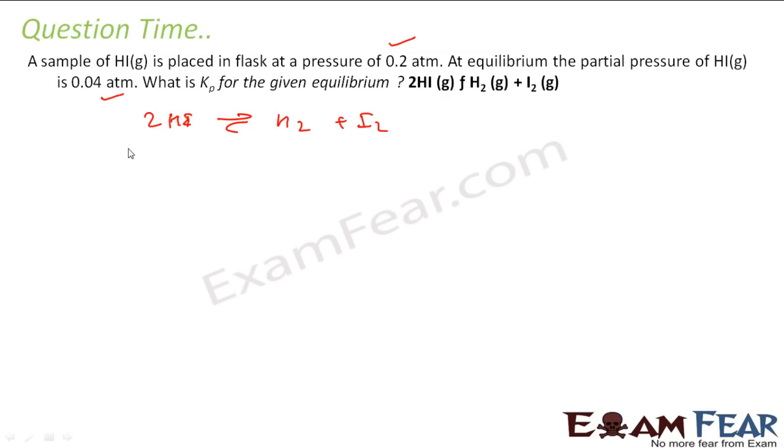Initially, it started with 0.2 atm pressure for this. T is equal to 0, and at t is equal to equilibrium, what will happen? This will become, let's suppose, minus p. If this is minus p, since this is 2HI, it will become p by 2 here, p by 2 here, right?